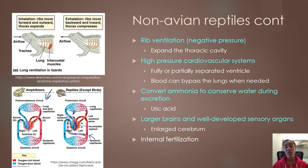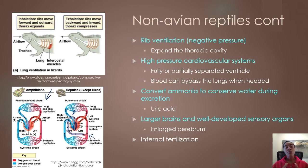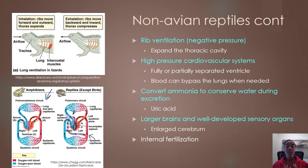All amniotes have larger brains and well-developed sensory organs compared to amphibians and fish. One key feature is a larger cerebellum, responsible for more complex behaviors such as social behaviors, critical thinking, and problem solving. We start to see more complex nervous systems and more complex behaviors due to enlargement of the brain in general and the cerebellum specifically. All non-avian and avian reptiles undergo internal fertilization, because the sperm cannot penetrate the shell to fertilize the egg externally. Fertilization occurs internally, and then as the egg travels down the female reproductive tract, the shell is added on before the egg is laid.